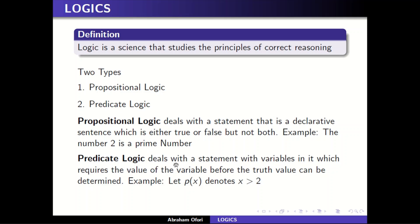Predicate logic deals with a statement with variables in it, which requires the value of the variable before the truth value can be determined. For example, let P(x) denote 'x is greater than two.' Before P(x) can be determined as true or false, we need to know the value of x. If x equals one, then one is greater than two, which is false. So in predicate logic you need some set of values first to satisfy your relation.